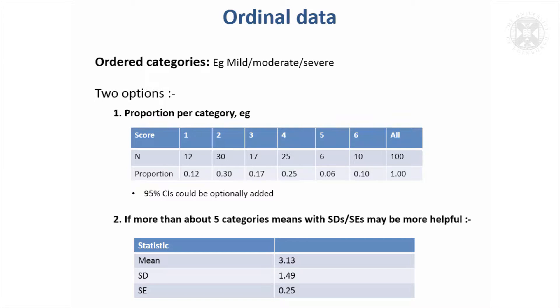Ordinal categorical data — if you had categories which were in an order, such as mild, moderate, severe symptoms, they would be defined as ordinal.